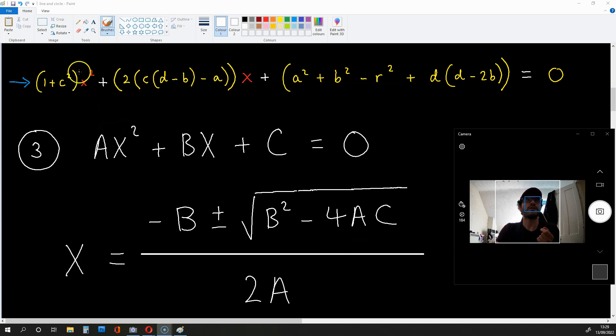Now, if we use these expressions in yellow and put them in the places of A, B, and C in this equation over here, we'll be able to get the value of x for the intersections. So this will turn into small x. This B over here will be replaced by this. The A will be replaced by 1 + c². And C will be replaced by this long expression over here.